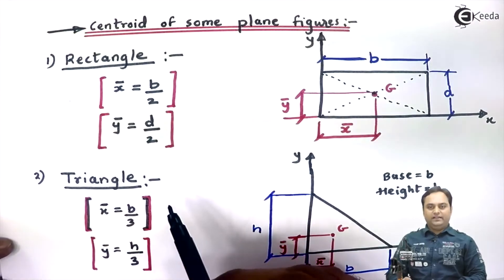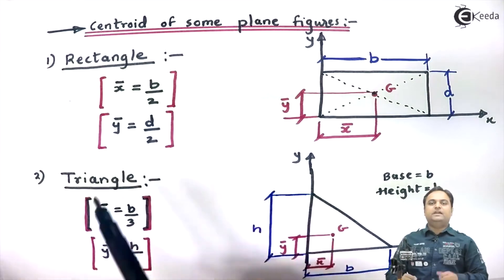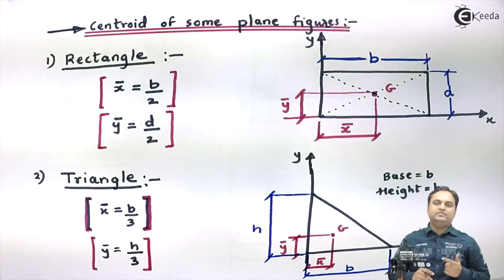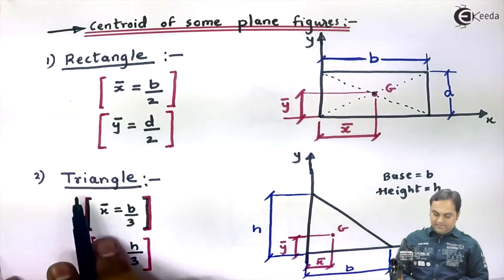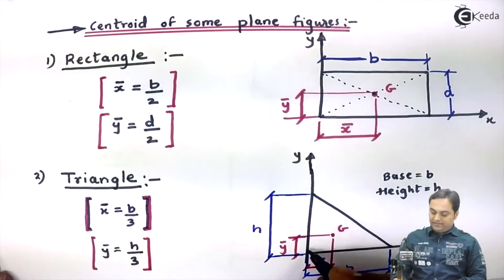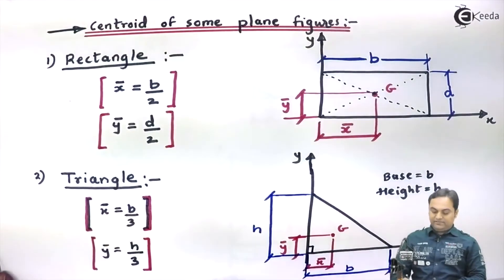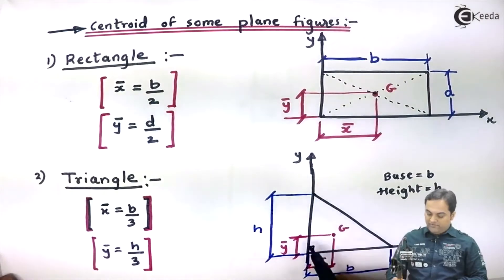So in order to find the centroid for a rectangle, it will be denoted by x̄ and ȳ, where x̄ is half of width, ȳ is half of height. So that was for a rectangle. Next, if we have a triangle.